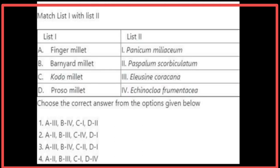Matching List 1 with List 2 for millet scientific names: Finger millet is Eleusine coracana. Barnyard millet is Echinochloa frumentacea. Kodo millet is Paspalum scrobiculatum. Proso millet is Panicum miliaceum. The correct option is the third option.